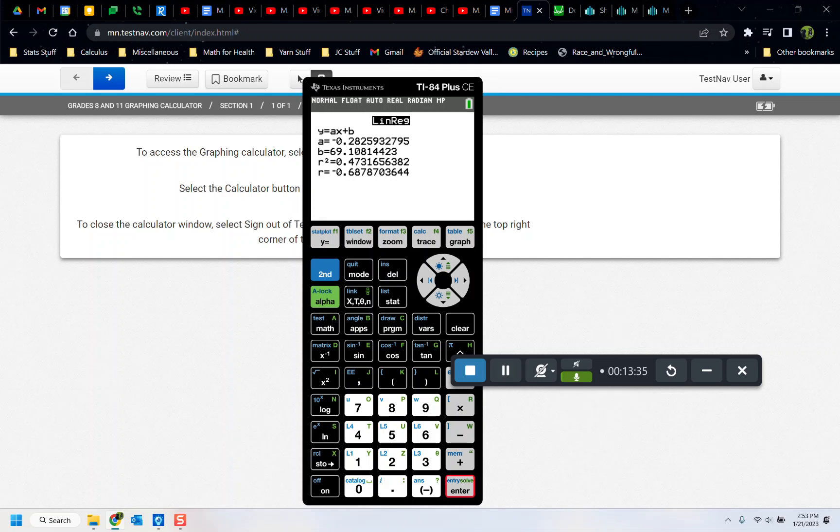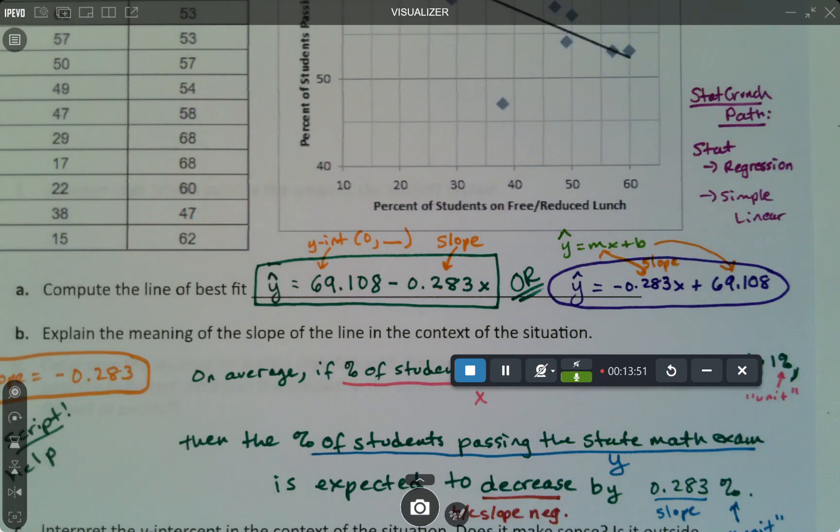But before I leave, you'll see it's telling you the format, y equals ax plus b, which is the standard algebra format. A is the negative 0.2825, b is 69.108. So those are the correct values, the same values that we got when we did it with StatCrunch.